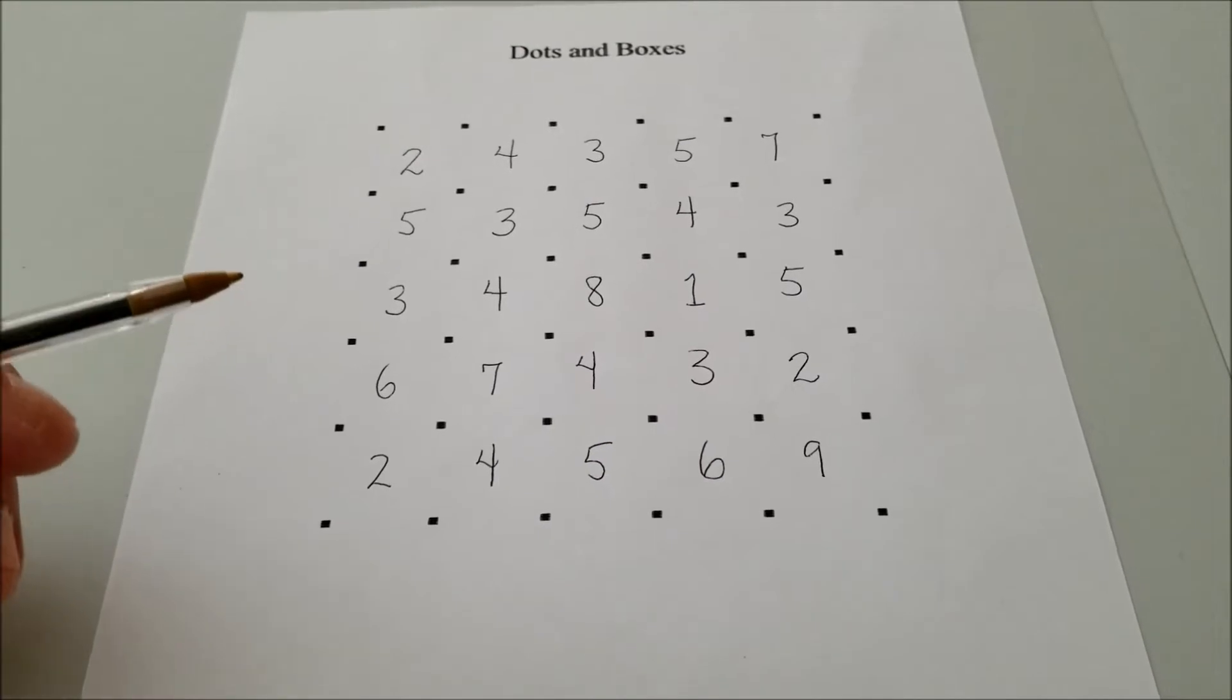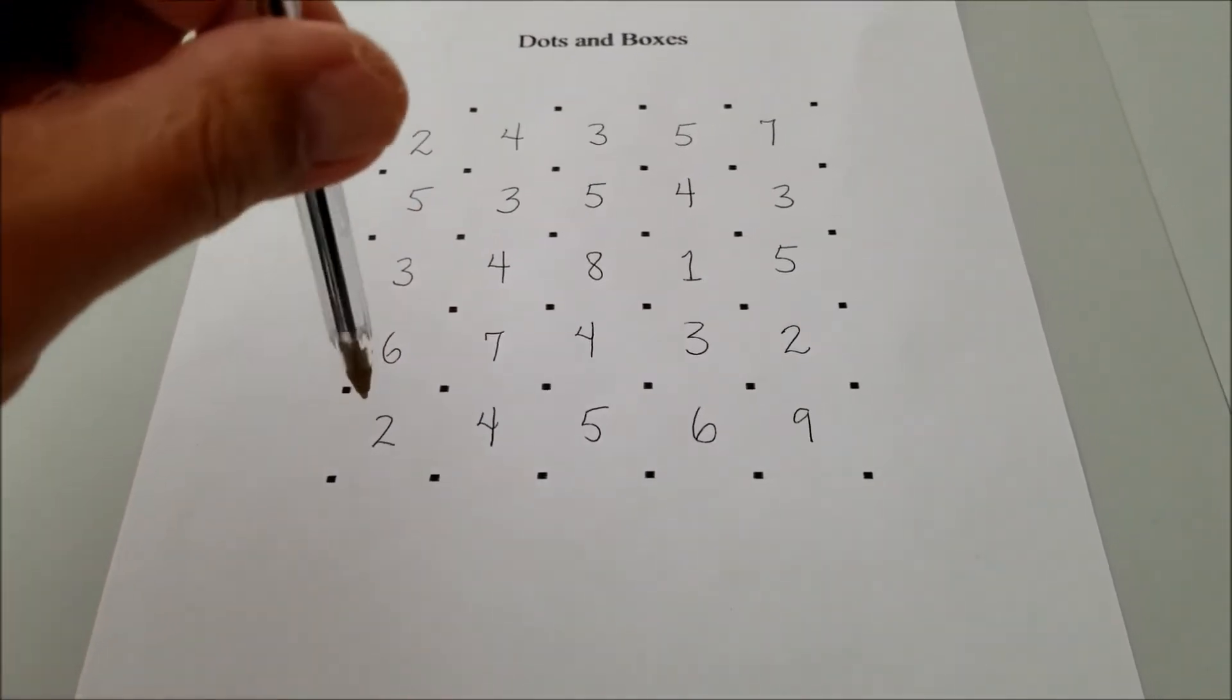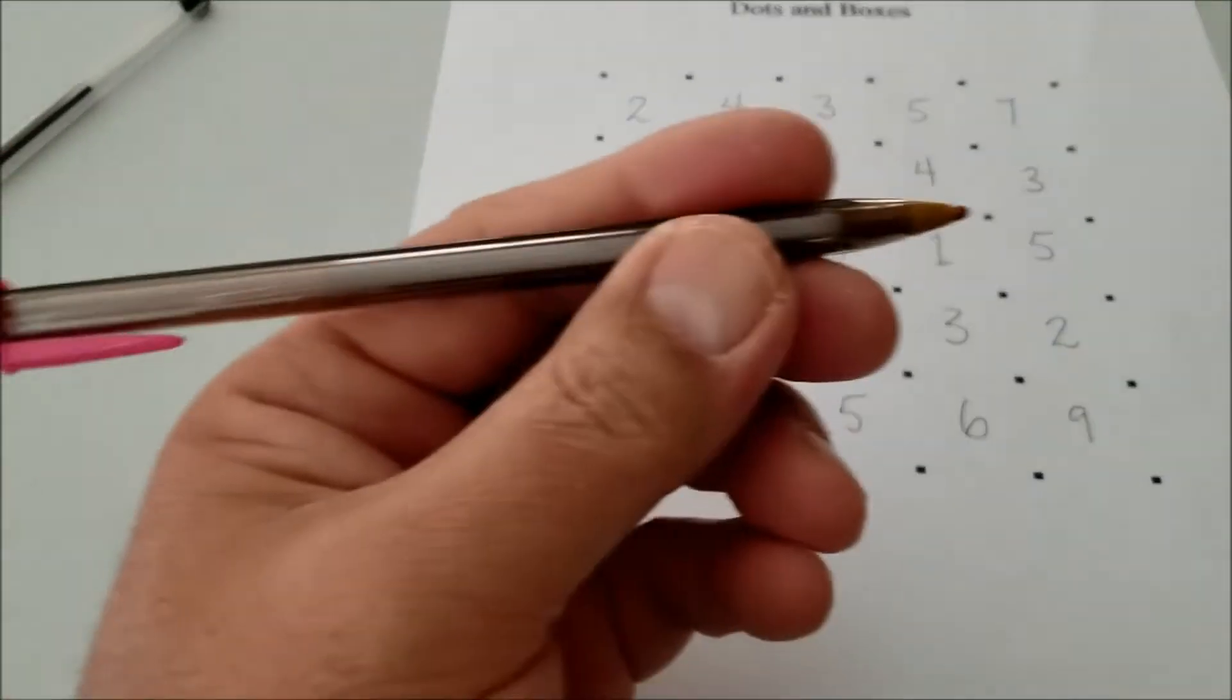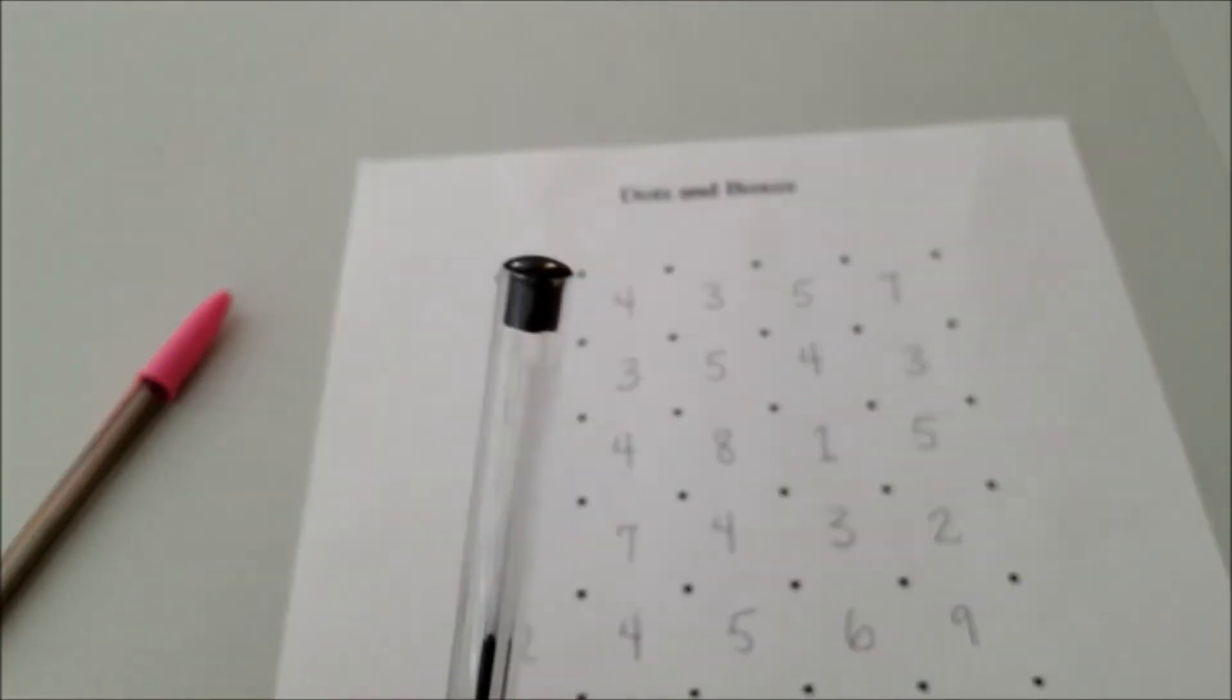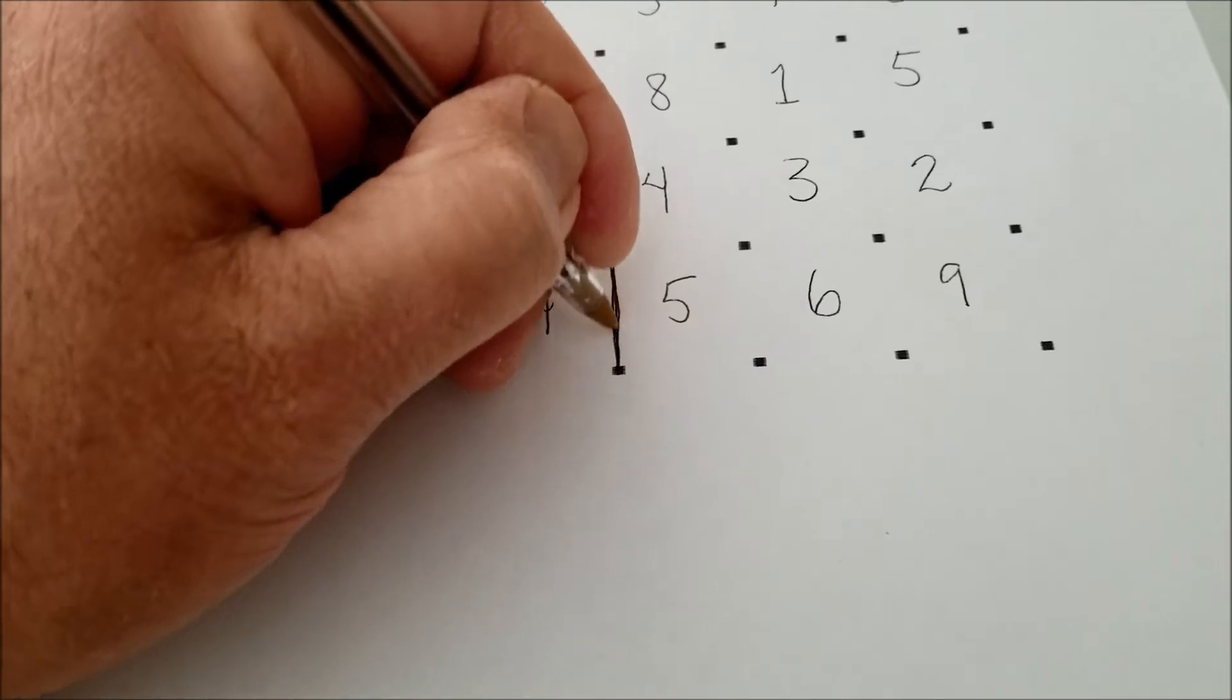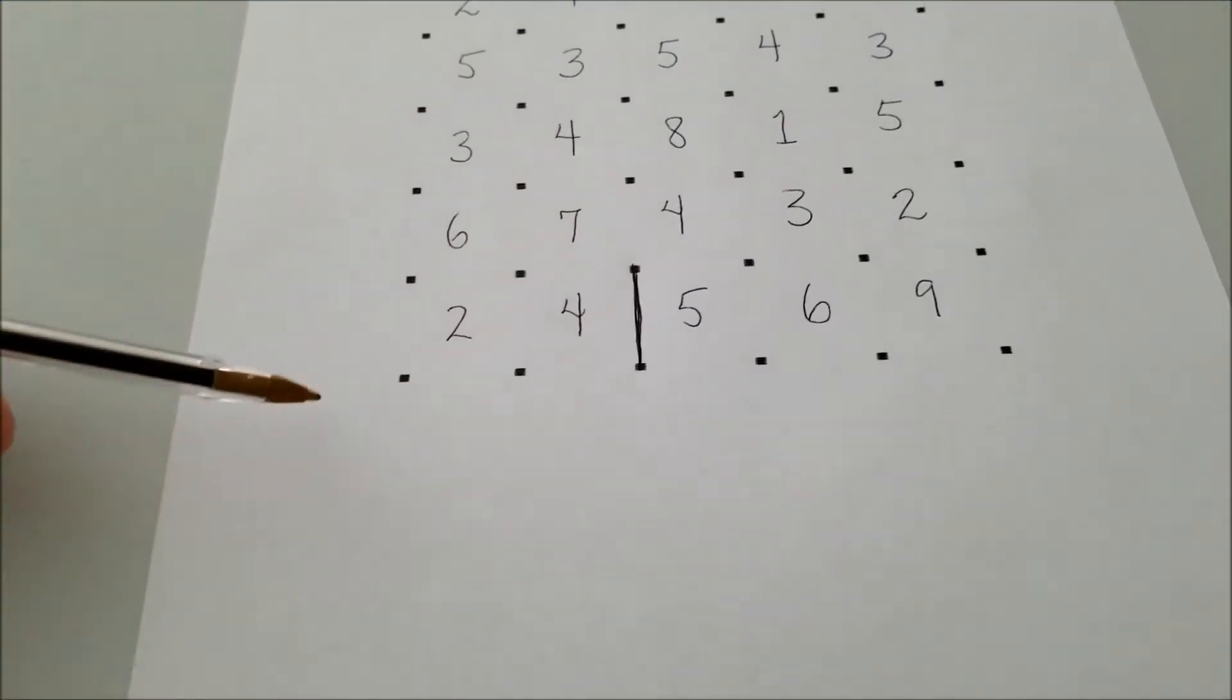So if you've ever played the dot game, here's how it works. One person decides to go first. And what you should do is you should use different colors just so you know who took their turn. So I have a pink pen and I have a black pen. Okay. So whoever goes first would go ahead and connect any two dots and it must be either vertical or it must be horizontal.